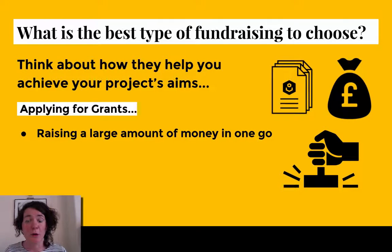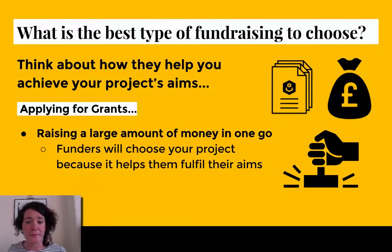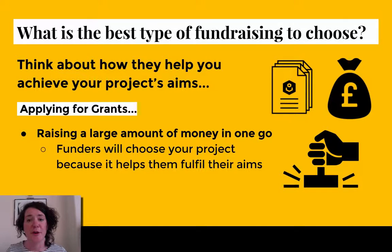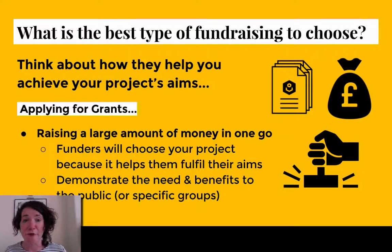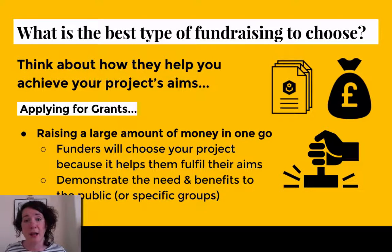It might be something like the Arts Council, which distributes money from lottery funding to different arts projects around the country. Funders are going to choose your project because it helps them fulfil their aims, so when communicating your idea and designing your project, keep those aims in mind. You'll need to know what the funders' aims are and be able to demonstrate the needs and benefits to the public or to specific groups supported by the grant-making organisations. This can be quite an involved process, but it's really valuable when thinking about how you're engaging with the public and bringing people in your local area into your project.